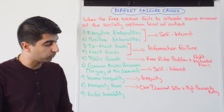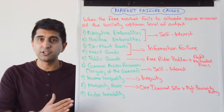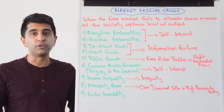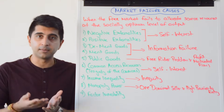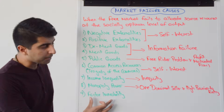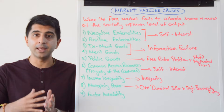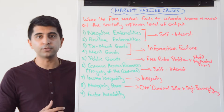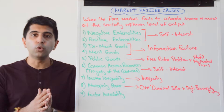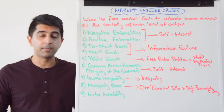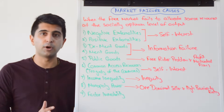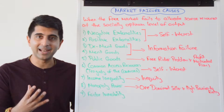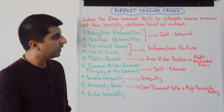Factor immobility is another source of market failure. We assume that when demand shifts, suppliers can respond by producing extra output, responding to the incentive of higher prices and profit. But if factors of production are immobile, suppliers can't produce that extra output, causing a misallocation of resources. In the labor market, workers may be structurally unemployed, occupationally immobile, or geographically immobile, preventing the perfect allocation of labor and leading to market failure.